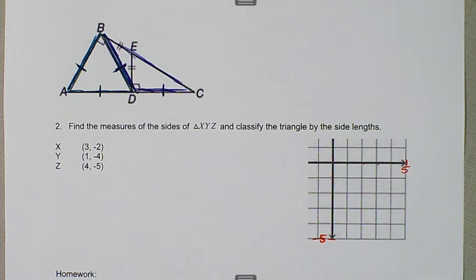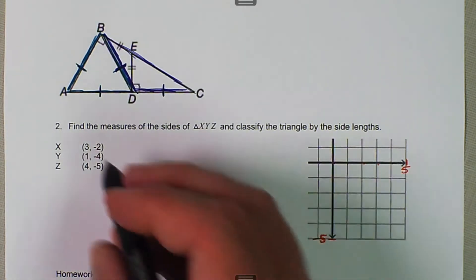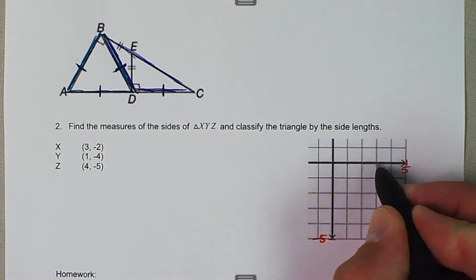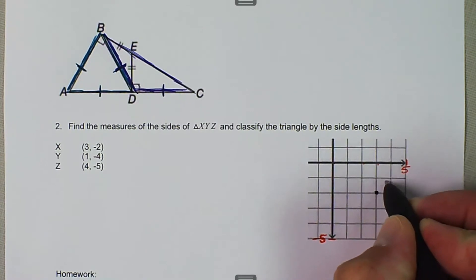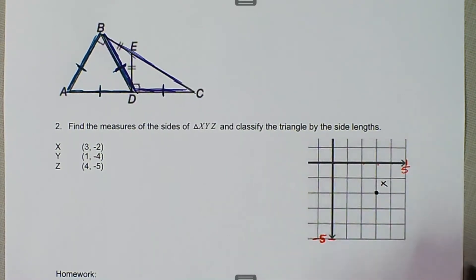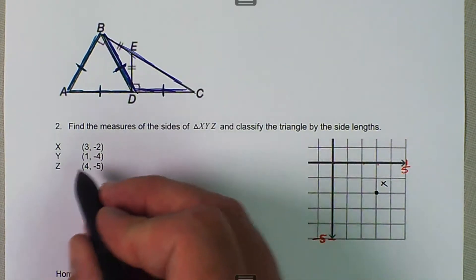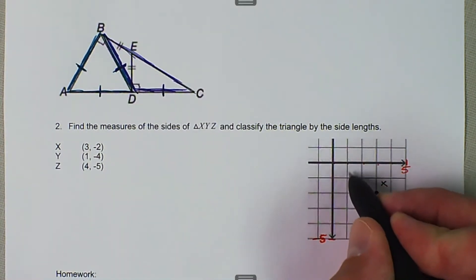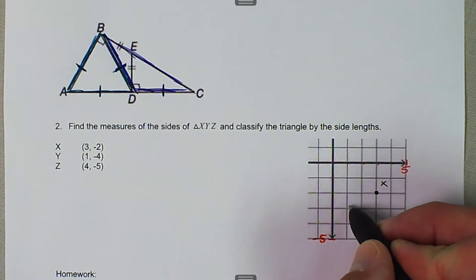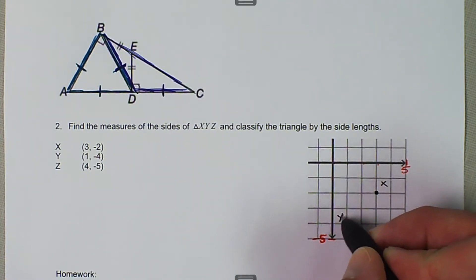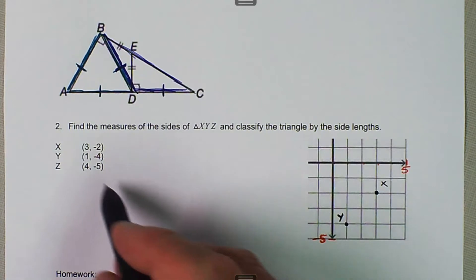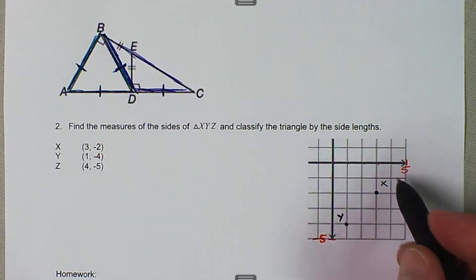So we have X at (3, negative 2), and Y is at (1, negative 4), and Z is at (4, negative 5). So that's our triangle right there.